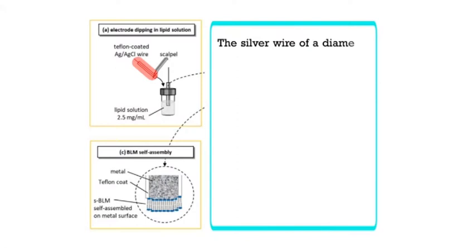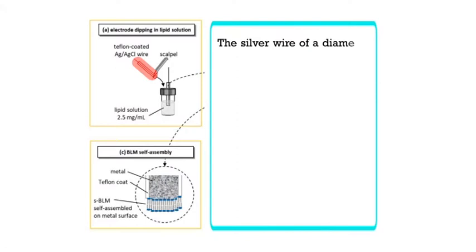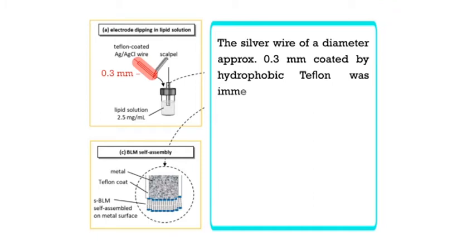The supported lipid bilayer can confer many key functions to biological membranes. Using the Langmuir-Blodgett technique, it is possible to obtain supported lipid membranes. A simple method of formation of a lipid film on a metal support was proposed by T.N.N. Salomon. A silver wire of diameter approximately 0.3 mm coated by hydrophobic Teflon was immersed into a lipid solution in n-decane. Then the tip of the wire was cut by a sharp knife and immediately immersed into the electrolyte, where the formation of the thin film occurred spontaneously. The disadvantage of this method is that the film formed on the rather rough metal surface is inhomogeneous and composed of monolayers, bilayers, or even multilayers.